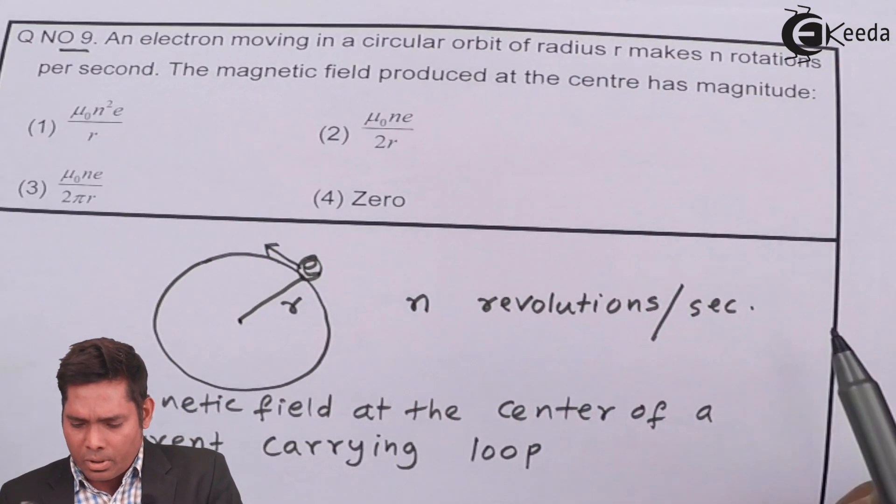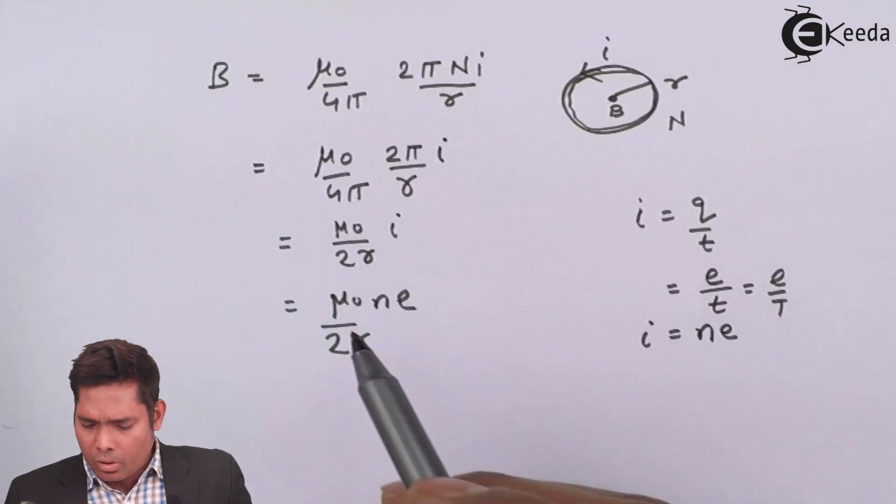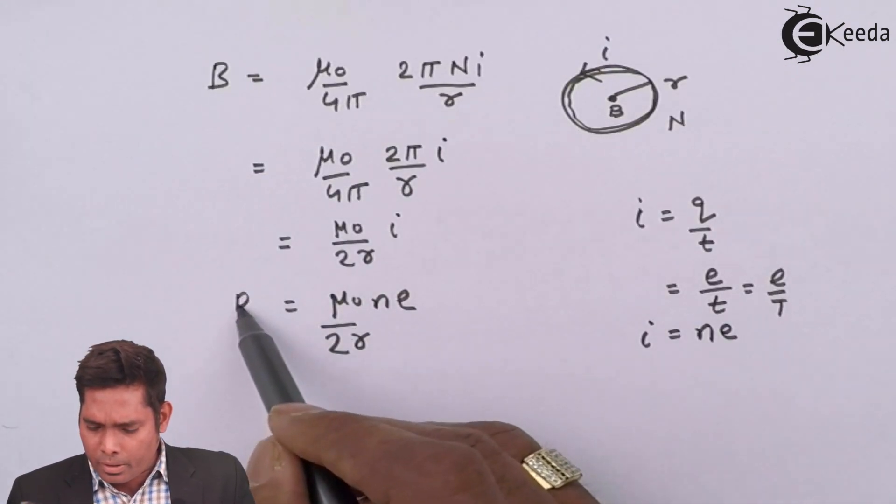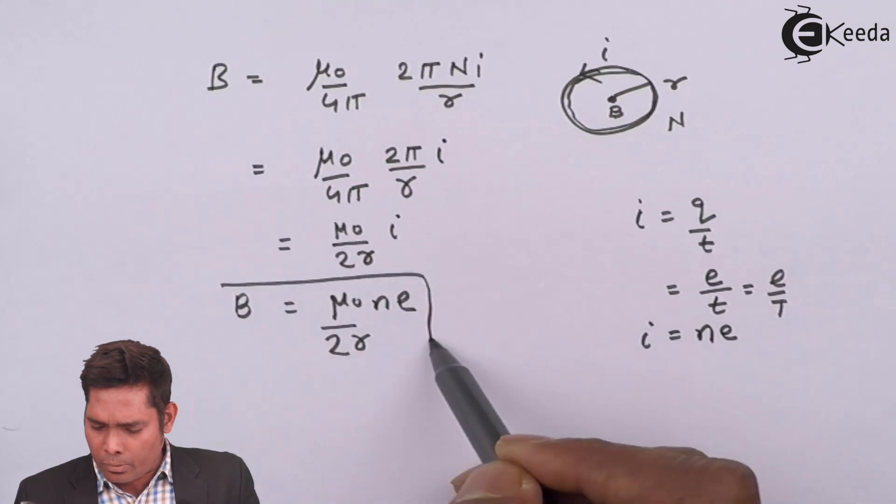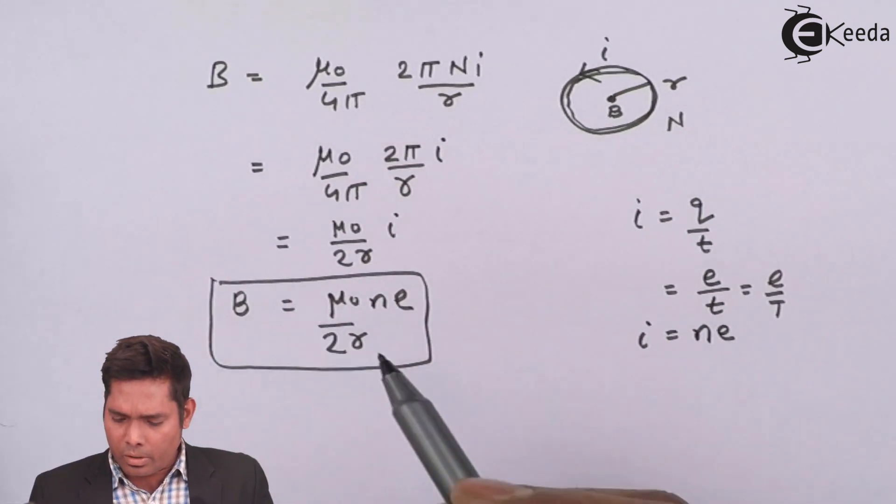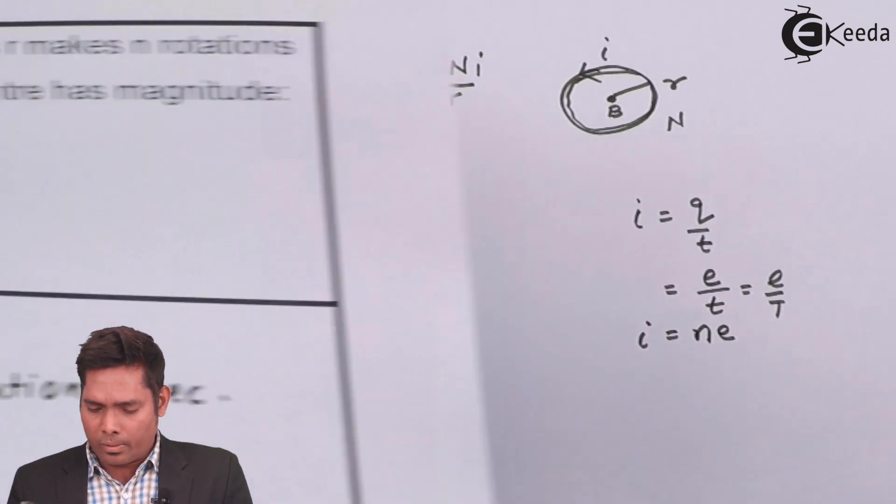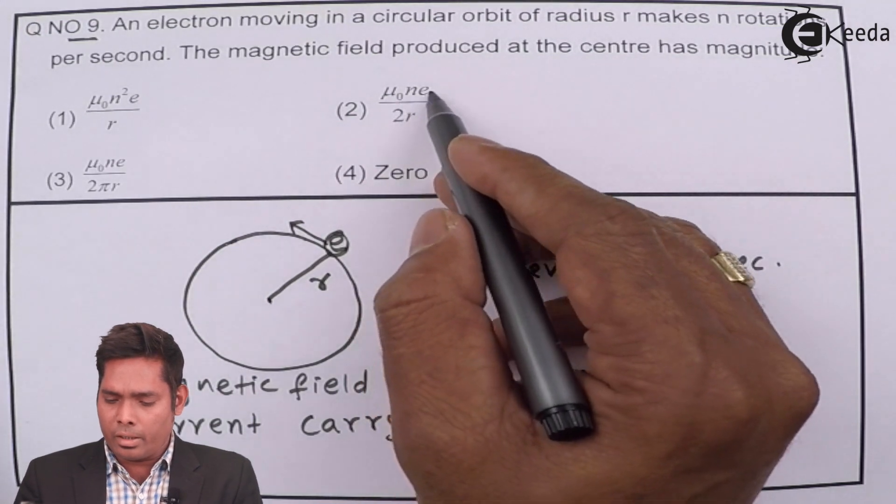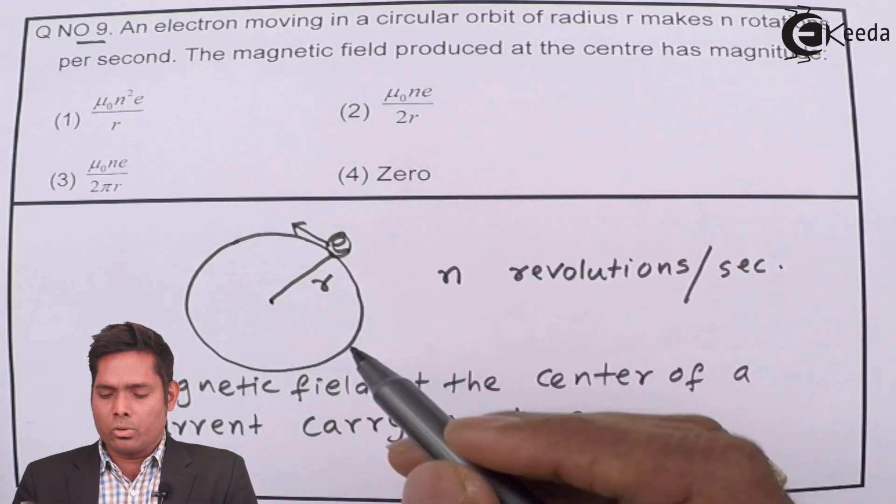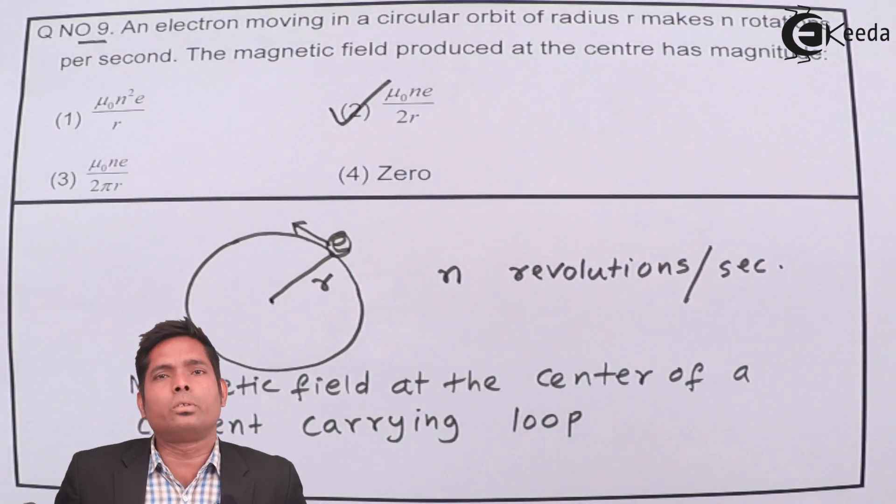So, if I see the option, the magnetic field coming out to be at the center of the revolution of electron in the orbit of radius r is coming out to be mu 0, n e divided by 2 r is this one. So, that is the answer to this question.